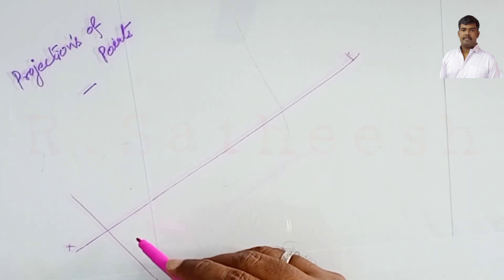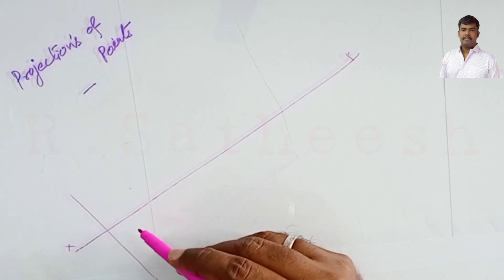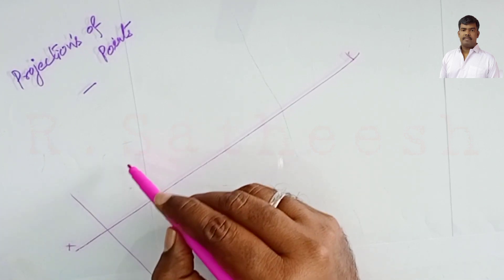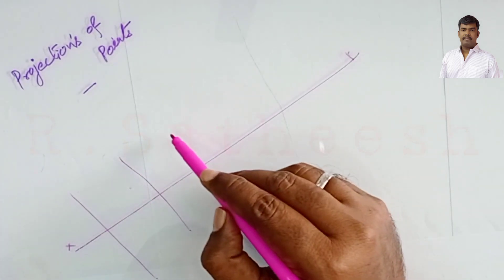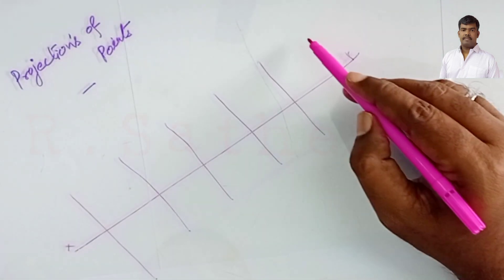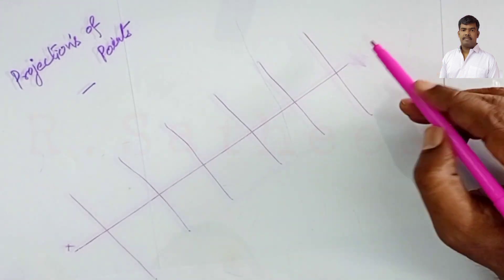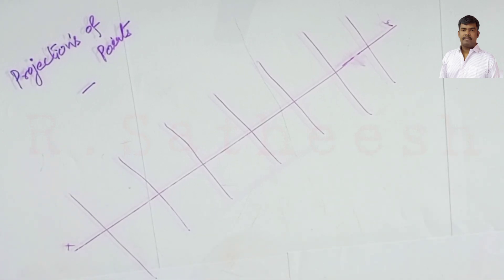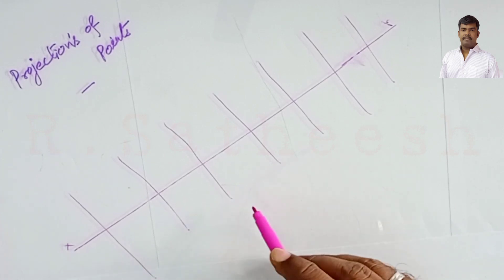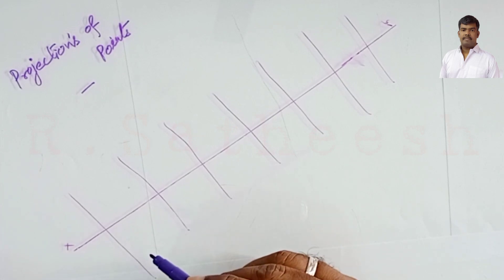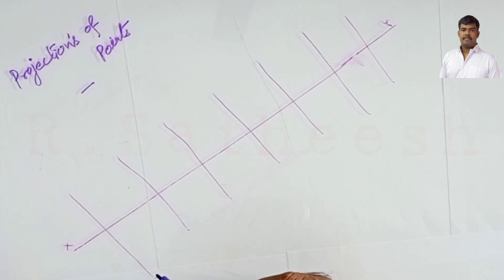Draw the projection lines — some above and some in front — as vertical lines perpendicular to XY. Then, 25 mm apart, draw projection lines for B, C, D, E, F, and G. So draw that number of projection lines, each 25 mm apart.